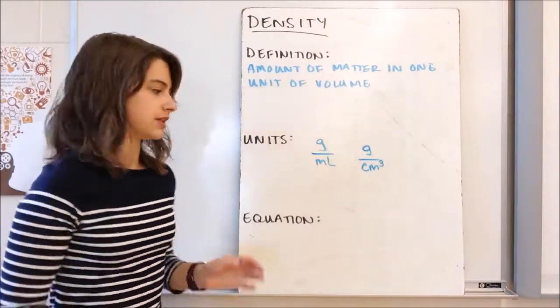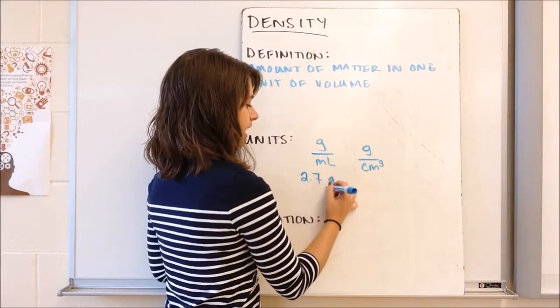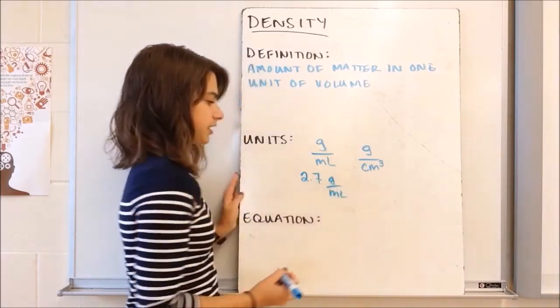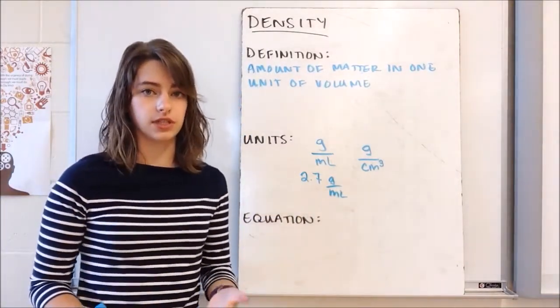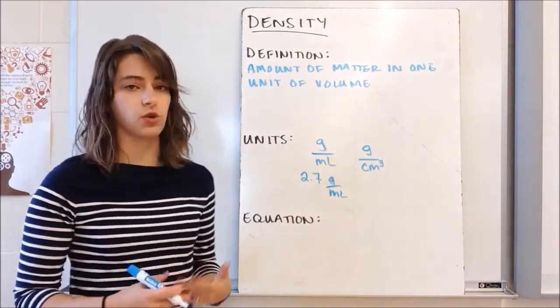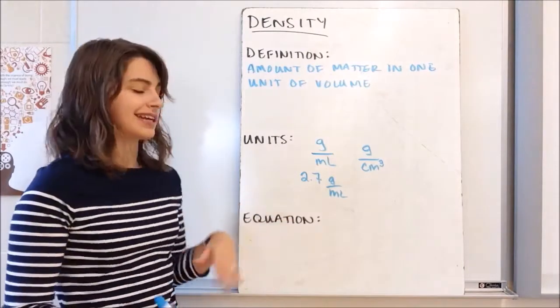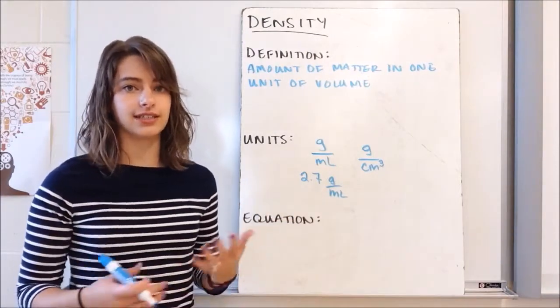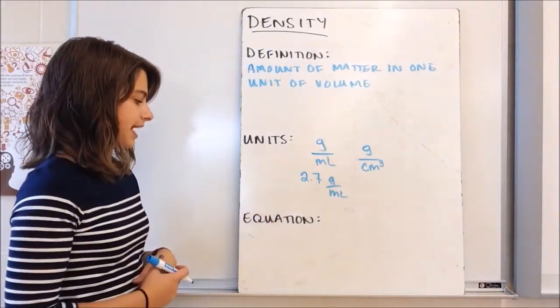Say for example, I have a substance that has a density of 2.7 grams per milliliter. This means that in one milliliter of the substance, that one milliliter is going to have a mass of 2.7 grams. If I were to measure out exactly one milliliter, I should anticipate my balance to read 2.7 grams. That's how we read that.